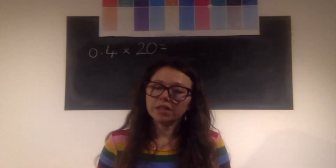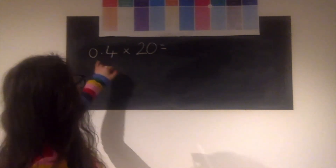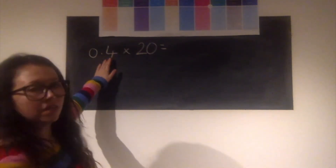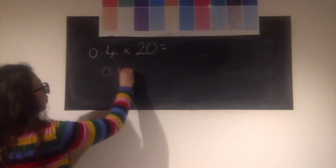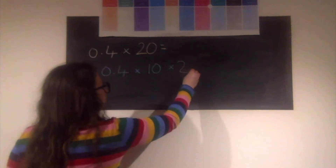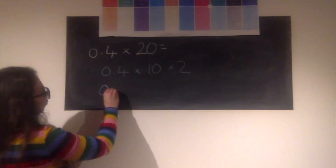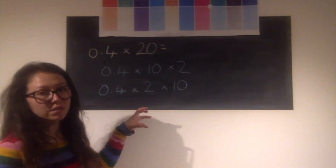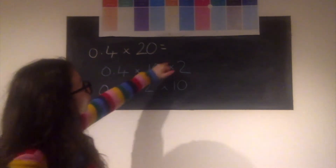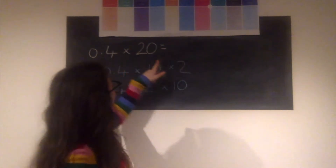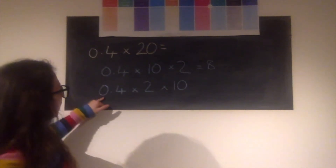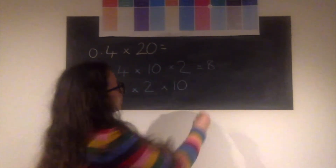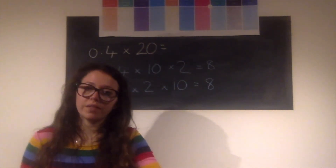I now want us to apply that knowledge of multiplying by 10 to multiplying by multiples of 10. So now I've got 0.4 multiplied by 20. I know to get 20 I need 10 times 2, so I can turn this into 0.4 times 10 times 2, or equivalently 0.4 times 2 then times 10 — by the commutative law it's the same. 0.4 times 10 gives 4, then 4 times 2 gives 8. Or: 0.4 times 2 gives 8 tenths, and 8 tenths times 10 gives 8.